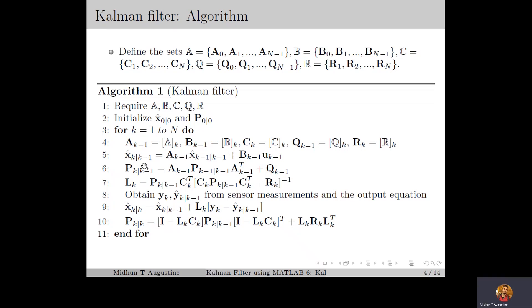This we repeat at each time instant K till the end of the time horizon N. The Kalman filter algorithm basically gives the estimate of the state vector in terms of its expectation and variance.